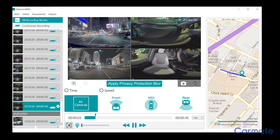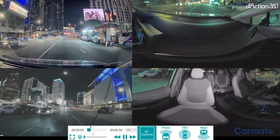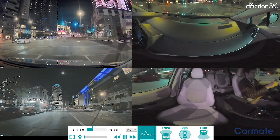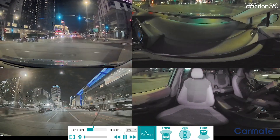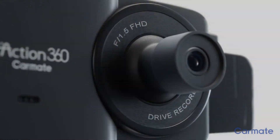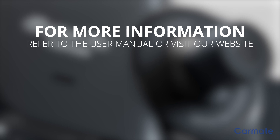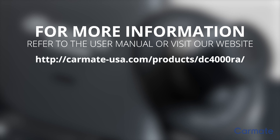Use the Full Screen button to view the app using your entire screen. For additional information about your DC-4000RA, please refer to the included user manual or visit our website at carmate-usa.com/products/DC-4000RA.